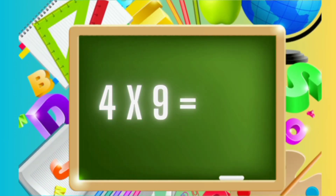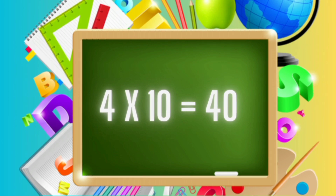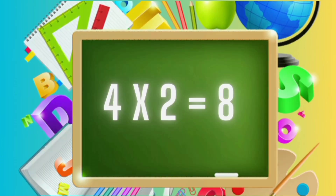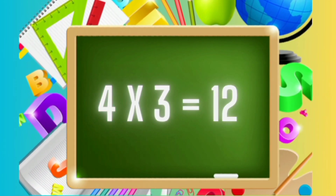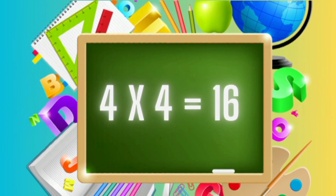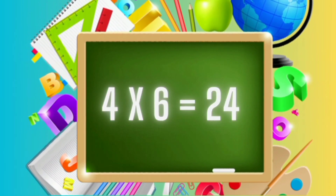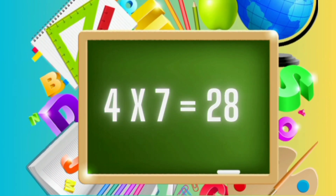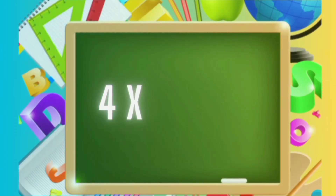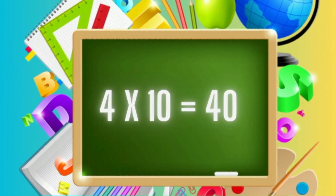4 nines are 36. 4 tens are 40. 4 ones are 4. 4 twos are 8. 4 threes are 12. 4 fours are 16. Four fives are twenty. Four sixes are twenty-four. Four sevens are twenty-eight. Four eights are thirty-two. Four nines are thirty-six. Four tens are forty.